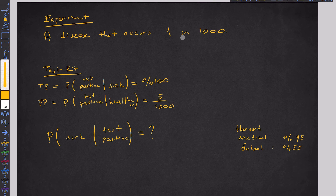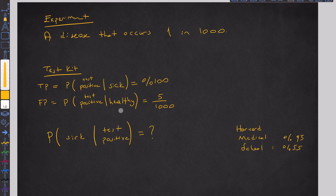So the question is this: all tests are done, our product is on the market. Somebody came — we don't know whether he or she is sick or healthy — and we made a test. The result of the test is positive. What is the probability that the person is actually sick? That's very important.